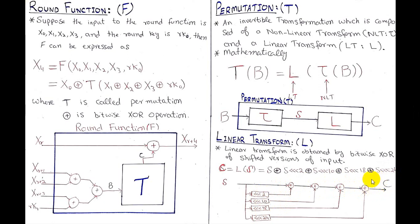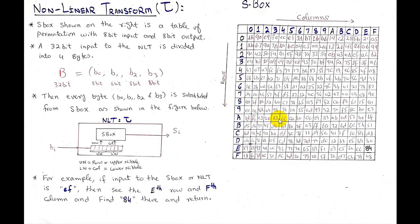That is the simple shifting and XORing operation of the linear transformation to produce C from S. Now the question is how we perform the non-linear transformation tau to get S from B. The non-linear transformation is essentially the SubBytes operation similar to AES. We have a 32-bit word B, which we divide into four bytes - four 8-bit values.